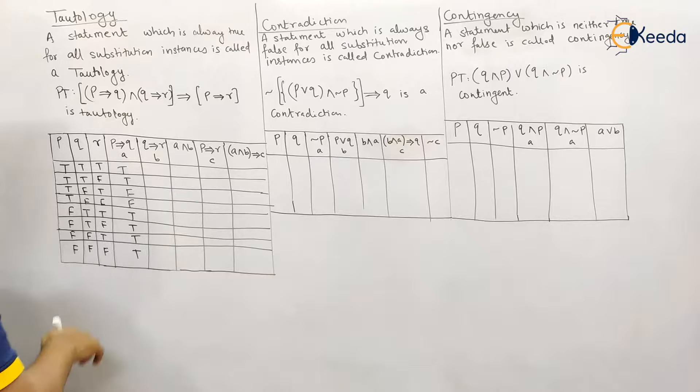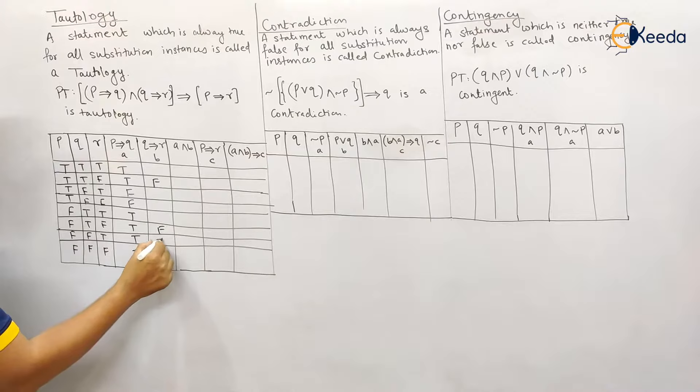Next, q implies r. Again we check for T→F. Here we get T→F, so that is false. Here again we get T→F, so that is false. The rest of all the instances are true.